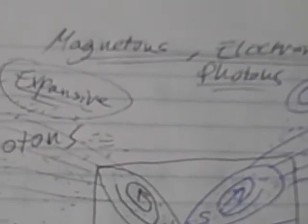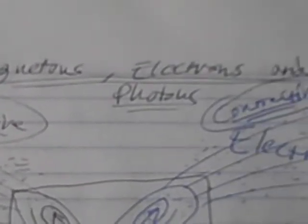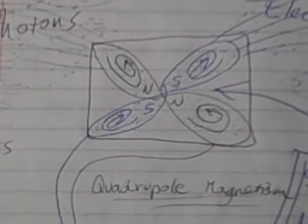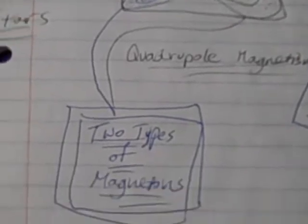This is another video called Magnetons, Electrons, and Photons. The basic theory is that everything is magnetic and that all magnets are quadrupole—they have four poles rather than two poles. If that is true, then this is at least an outline of how magnets look and how they work.